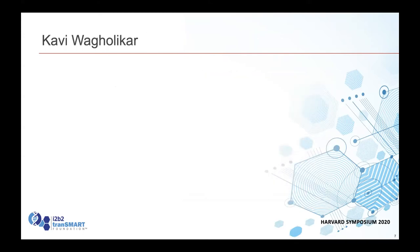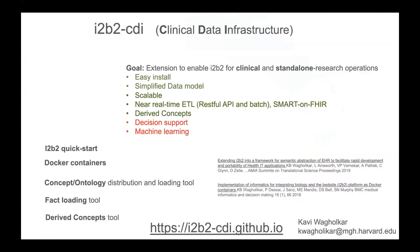Kavi, are you on? Yes. I incorporated your two screens into my presentation. So tell me when to go forward. A little bit of a digression here — I'll speak for a total of about five minutes. I want to talk about the i2b2CDI project. It's part of the ETL effort. The idea of this particular project is to enable i2b2 to be used for clinical operations — as a standalone system and for standalone research, like at the level of a lab. i2b2 has always been used at an institutional level for helping researchers identify cohorts for clinical studies.